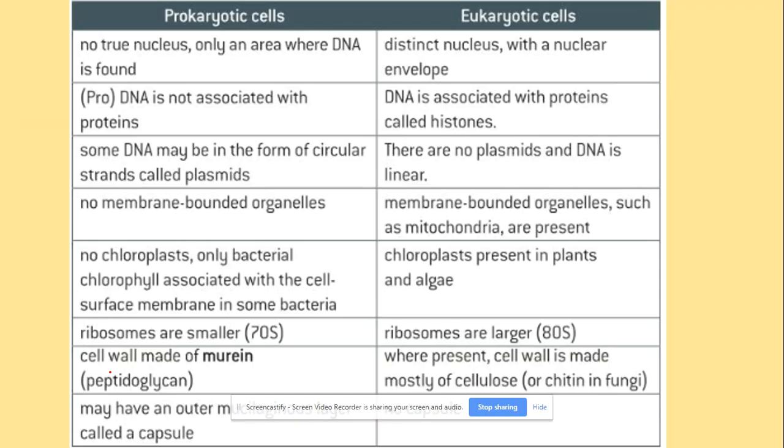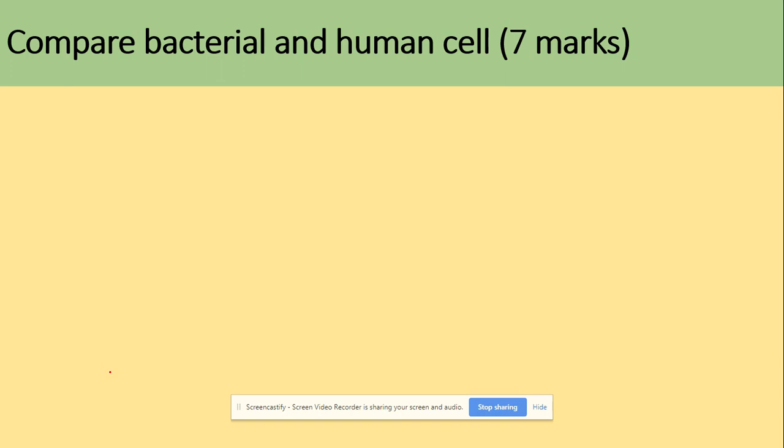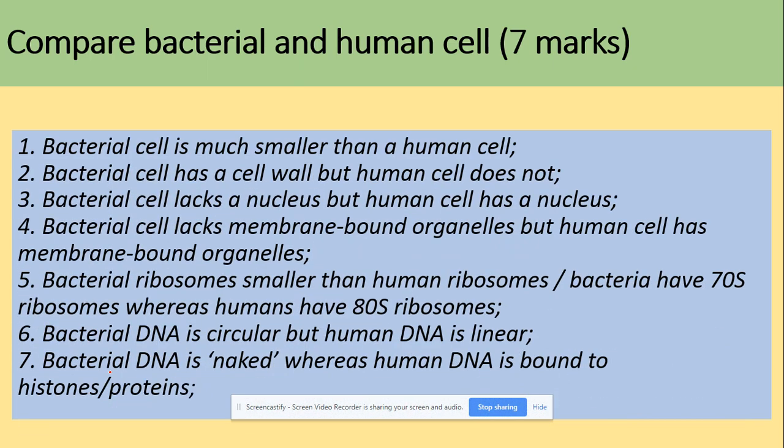So those are the differences between prokaryotic and eukaryotic cells which you've got in your book, but when it comes to past paper questions, you're not necessarily going to be asked about those. You're not going to get marks for each of those individual little things. When you're going to get marks, it's more advanced stuff. So easy marks come from the fact that bacteria is much smaller, the bacteria has a cell wall but human doesn't, the bacteria lacks the nucleus but human has a nucleus. But look what's here, you're comparing.